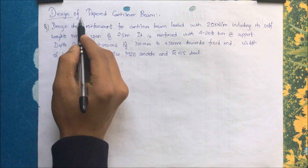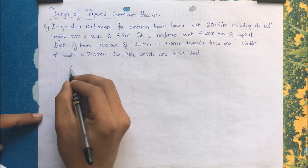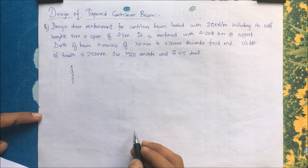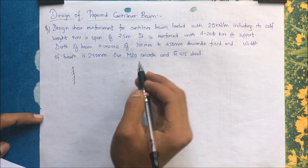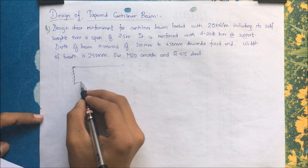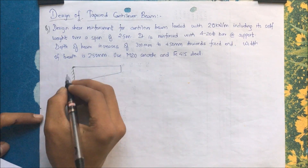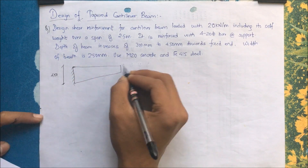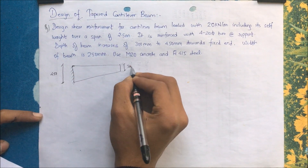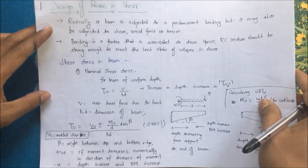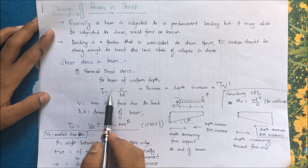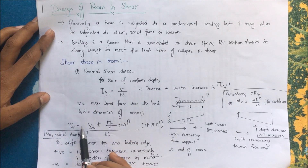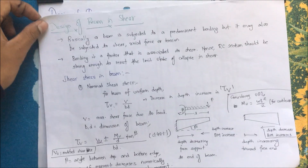Now let me discuss the design of a tapered cantilever beam. We have a problem where the depth of the beam increases from 300 mm to 450 mm towards the fixed end, meaning 450 mm at the fixed end and 300 mm at the free end. The nominal shear stress formula for a tapered beam is from IS code clause 40.1.1.